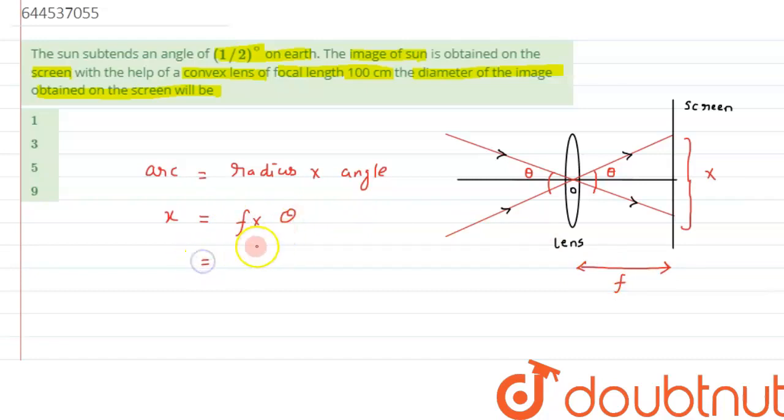We have θ as half a degree and focal length as 100 centimeters, which is 1 meter. So x = 1 × (1/2) × (π/180), converting the angle to radians. This gives us approximately 0.89 centimeters.